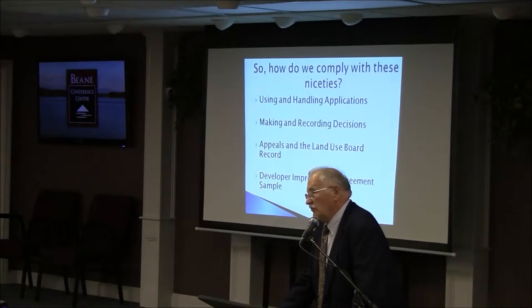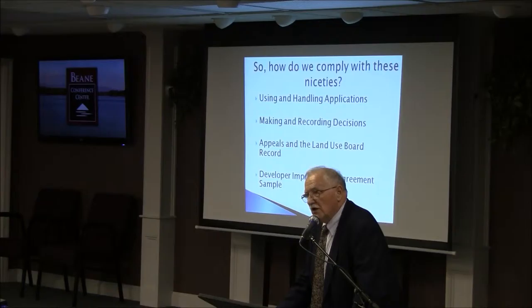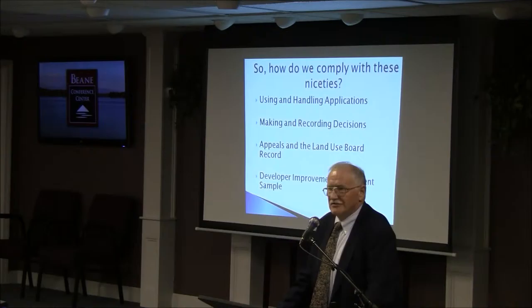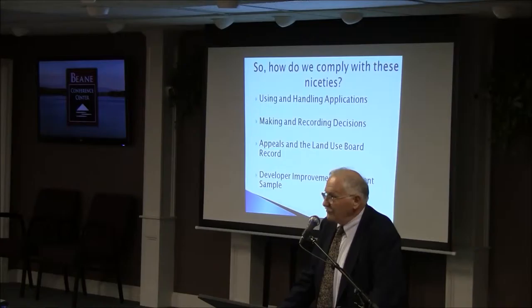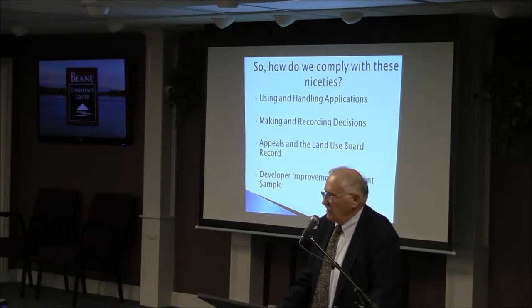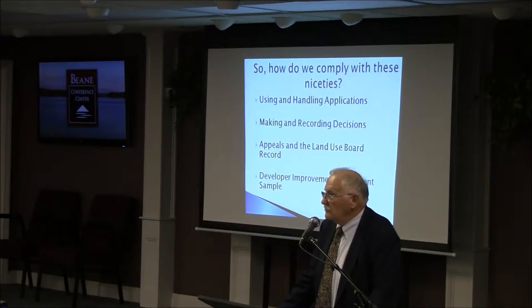Basically, what the developer improvement agreement in Exhibit A does is say what the developer is supposed to do. As conditions, the first thing you say is: comply with our decision — and hopefully just the decision and the plans — and the decision will include things like what you have to do. The example is building a road in the developer improvement.